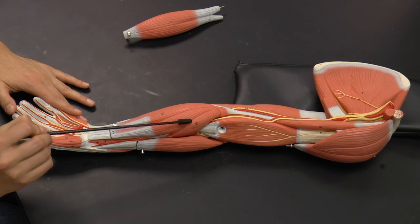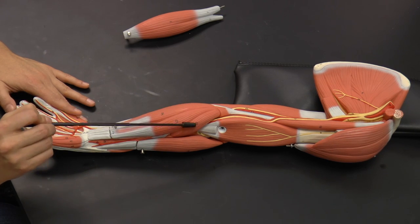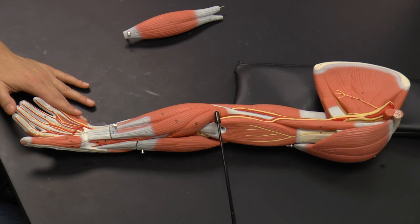Taking a look at the muscles of the forearm, the superficial muscles of the forearm, you have a muscle here called the pronator teres. Here you have the flexor carpi radialis.